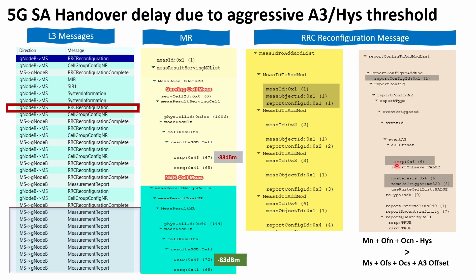After getting this information, we found that the current A3 offset and hysteresis were quite aggressive — approximately 3 dB for the offset and 3 dB for the hysteresis. This can cause a delay in the handover because signal fluctuations between the serving and neighbor cells may prevent the A3 condition from being sustained, so the handover is not triggered. In the next slide, I'll show the same mapping logic for a B1 event, and then we'll go through the actual text log files.